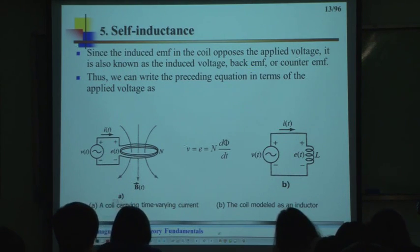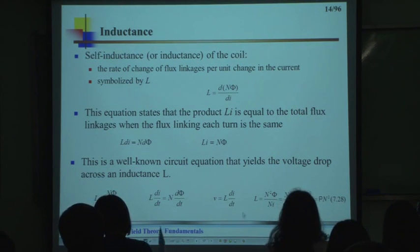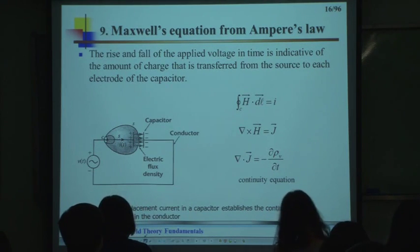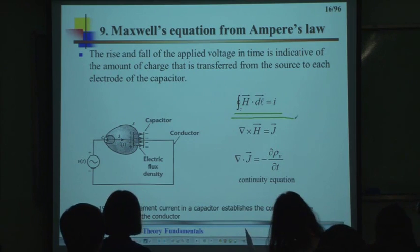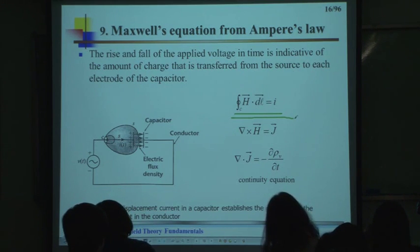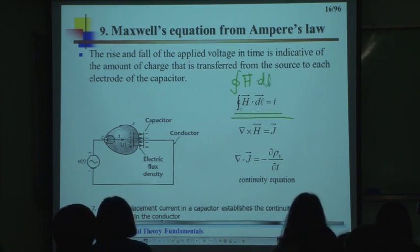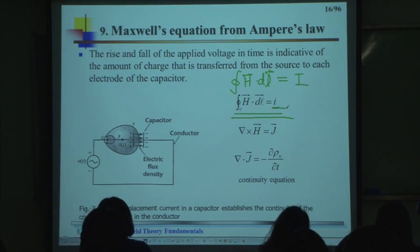Let me skip self-inductance. Let's go to another Maxwell equation from Ampere's law. We studied Ampere's circular law, which was written as the line integral of H = I (capital I for constant, lowercase i for time-varying current). So when the current is a function of time, we write lowercase i.